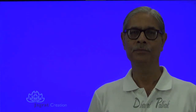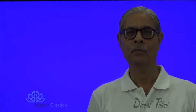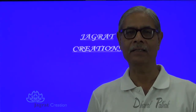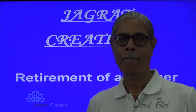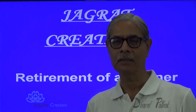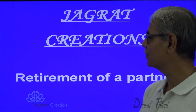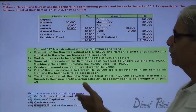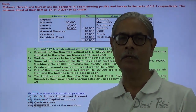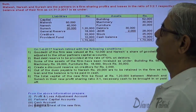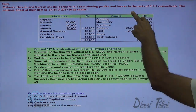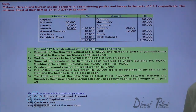This video is created by Jagrath Creation. I want to solve one sum on retirement of a partner. Mahesh, Naresh and Suresh are partners in a firm sharing profits and losses in the ratio of 3 is to 2 is to 1.